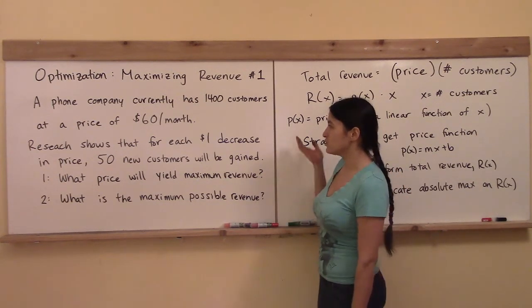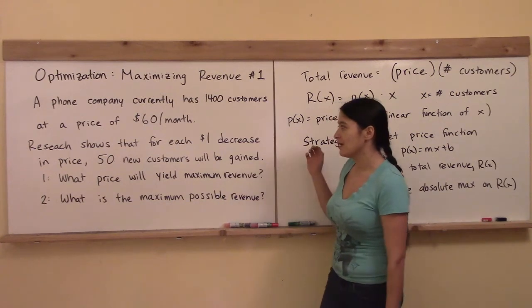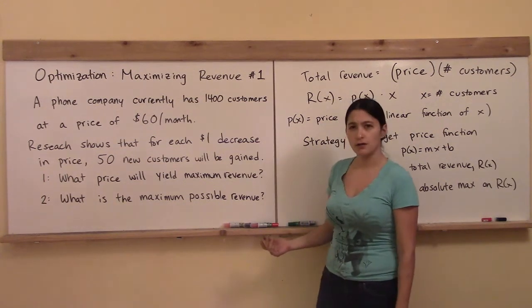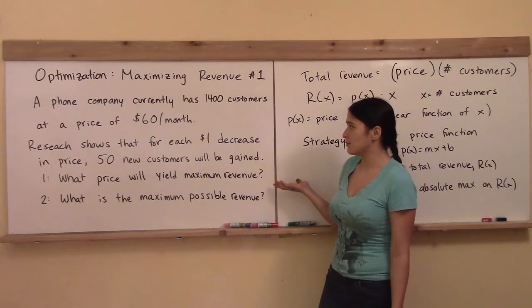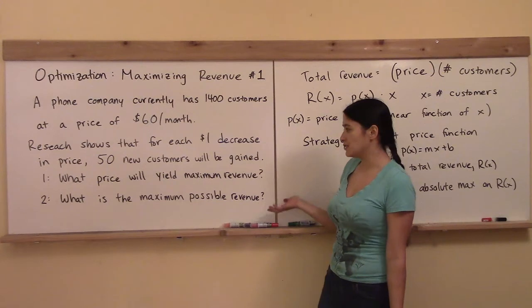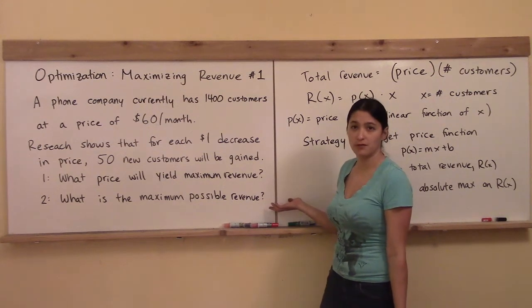Then they did a research study, and the research showed that for each one dollar decrease in the price, 50 new customers would be gained. Now, with that model, what price should they set their monthly price at to yield maximum revenue? And at that price, what will the maximum possible revenue be?